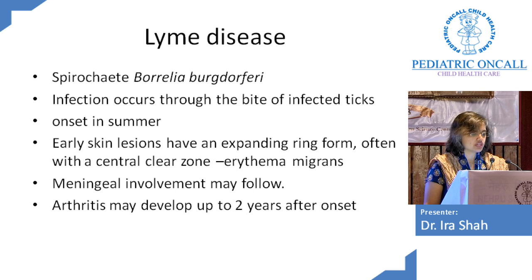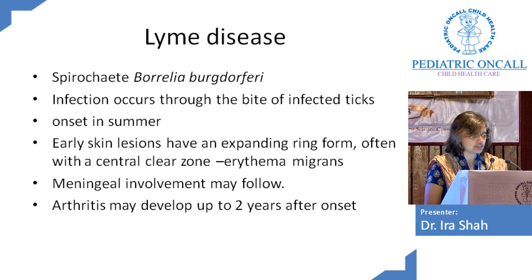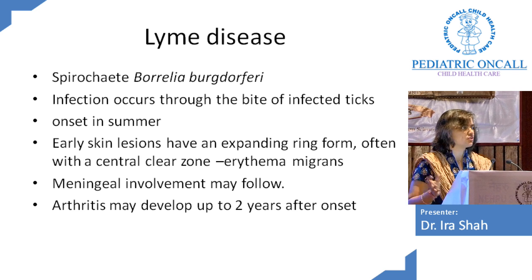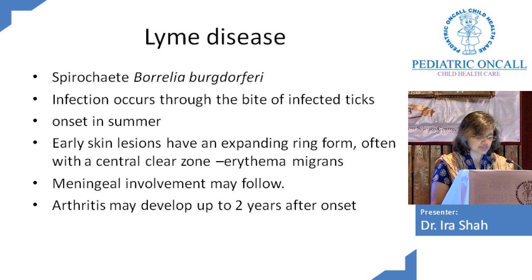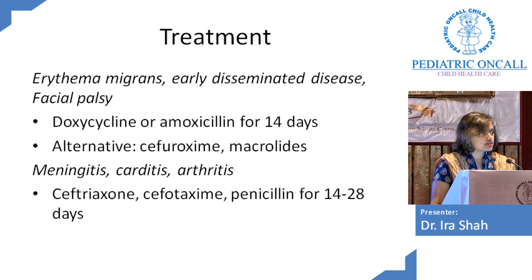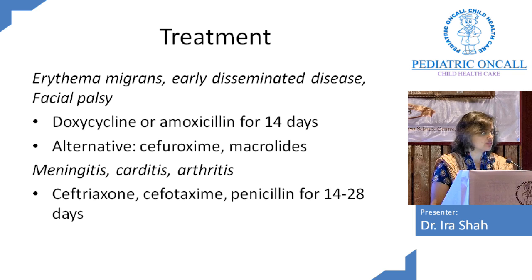Lyme's disease is caused by Borrelia and comes from bites of infected ticks, usually with onset in summer when people go into the woods for trekking. The earliest skin lesion is erythema migrans — usually isolated, but sometimes disseminated. If missed, patients can develop facial palsy and arthritis. Treatment: doxycycline for children over eight years; alternatives are amoxicillin or cefuroxime. For meningitis, carditis, or arthritis, give ceftriaxone for 14–28 days.